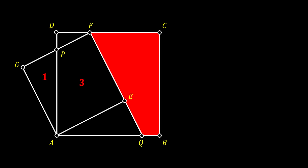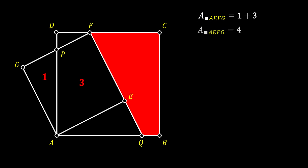Now we can easily get the area of our smaller square AEFG, since we know that its area is equal to the sum of the areas with the values of one and three, so the area of the smaller square is equal to four. But since we know that area is also equal to the side squared, we can conclude that the side of our smaller square is equal to two.